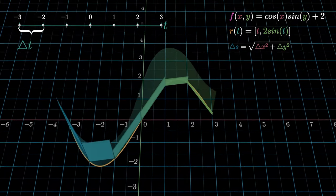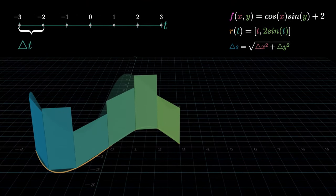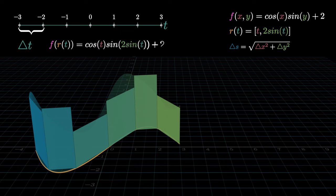The heights of these rectangles have the function values at the starting points of the basis, which can be obtained by plugging in the parametrization for the curve into the function f. So our approximate area is the summation f of r of t times delta s.